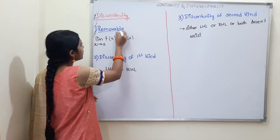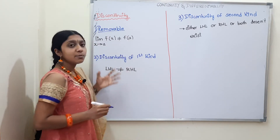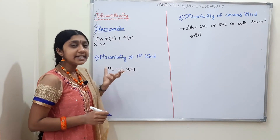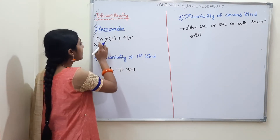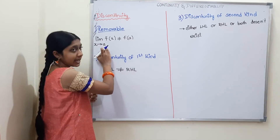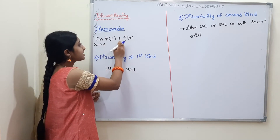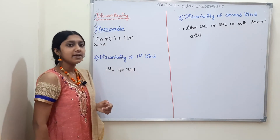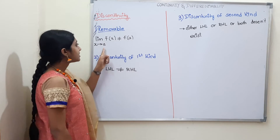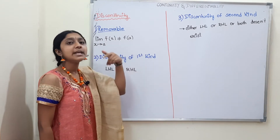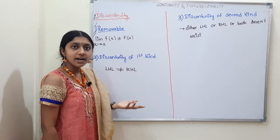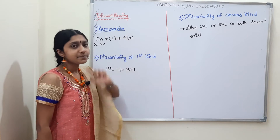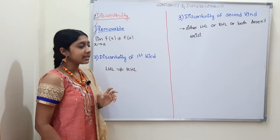First one: Removable discontinuity. The condition is — the limit of x tends to a of f(x) is not equal to f(a). That is removable discontinuity.